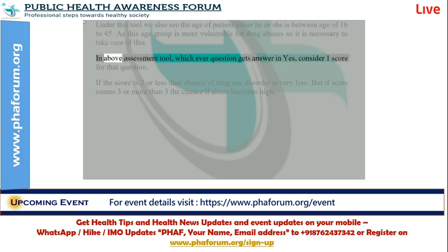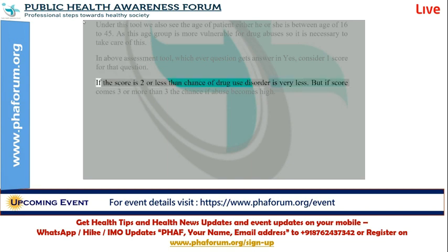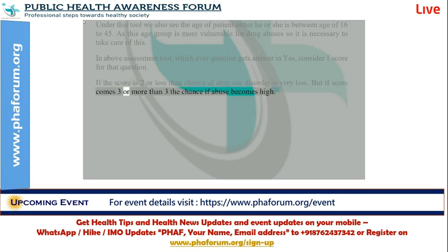In the above assessment tool, whichever question is answered yes, consider a score of 1 for that question. If the score is 2 or less, the chance of drug use disorder is very low. But if the score comes to 3 or more, the chance of abuse becomes high.